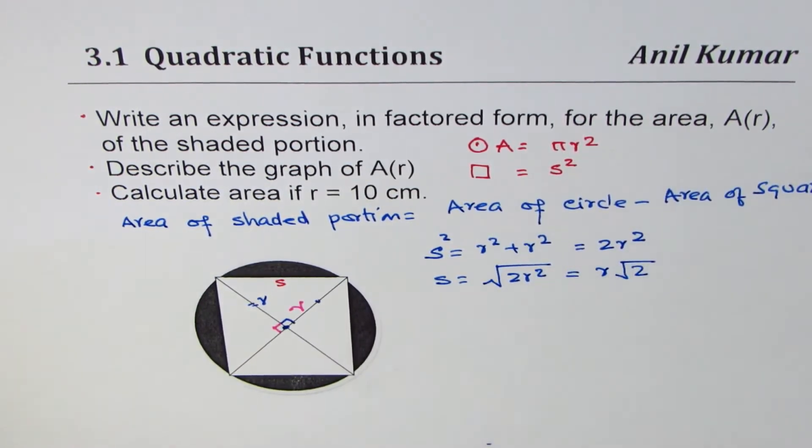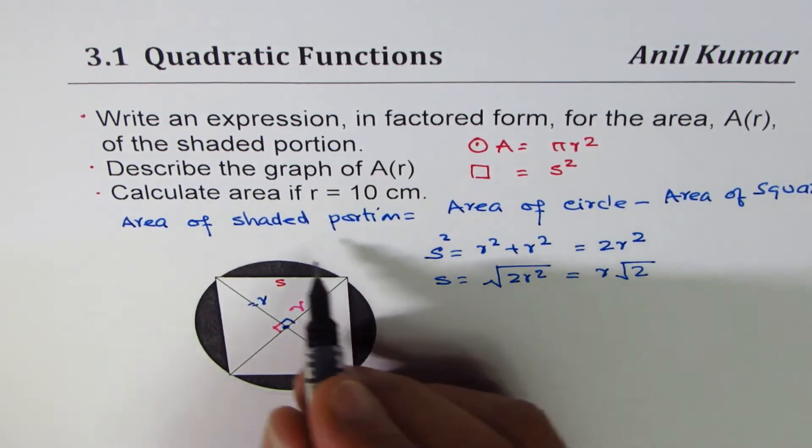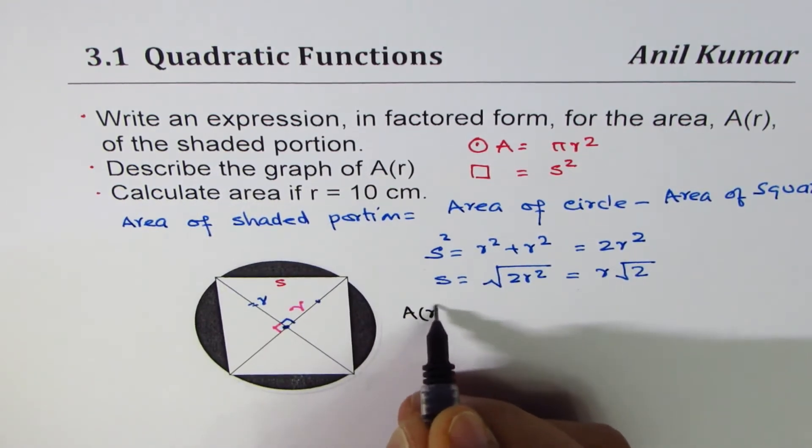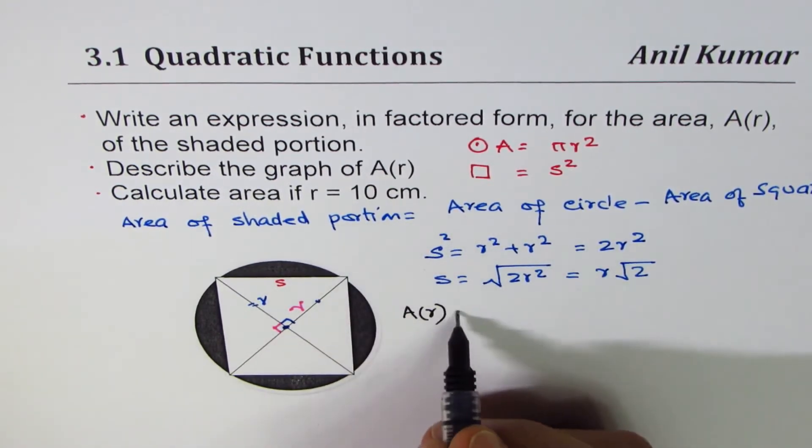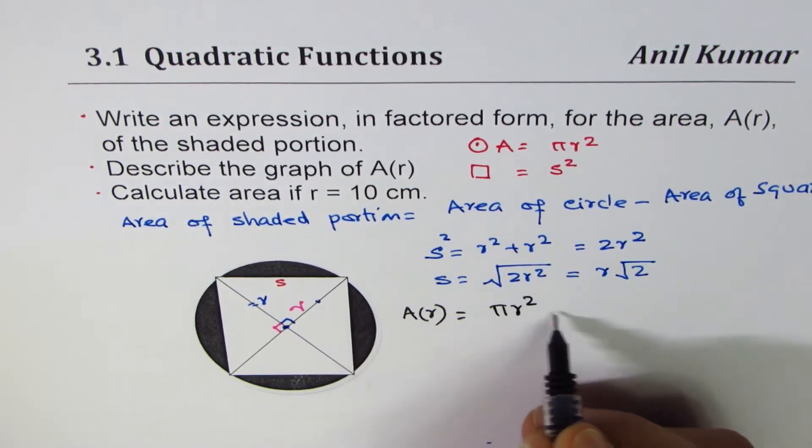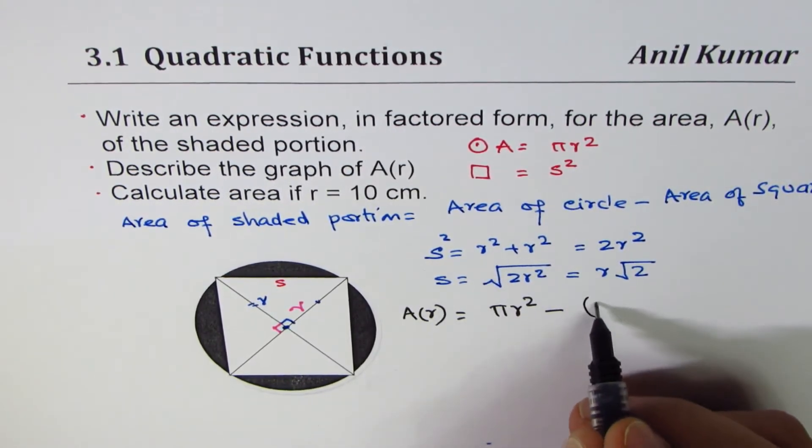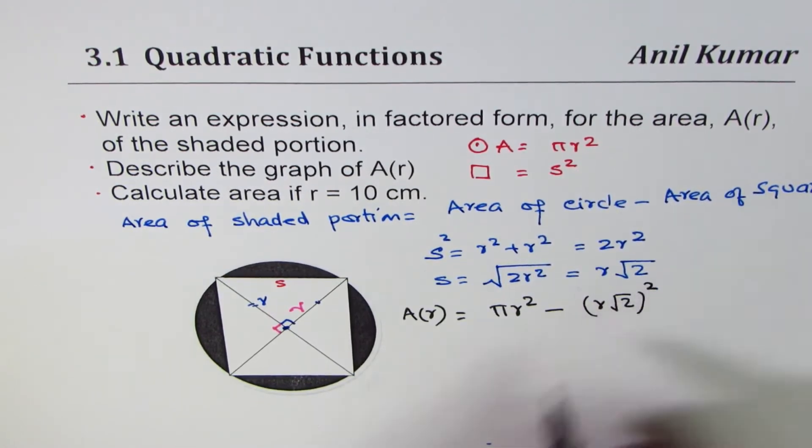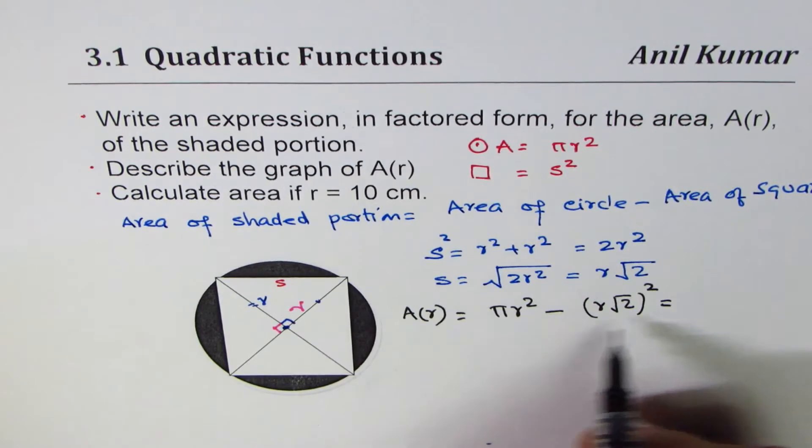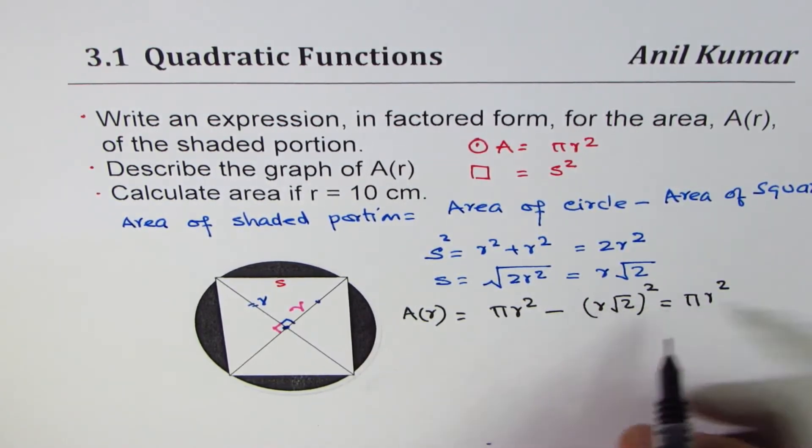Now we can write down the area of shaded portion in terms of r. A(r) is the area of shaded portion. It equals area of circle, which is πr², take away area of square, which is (r√2)². That gives you πr² minus 2r².